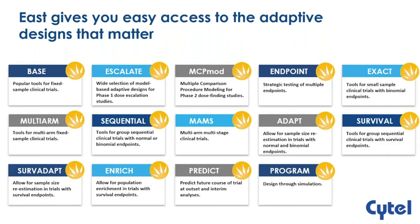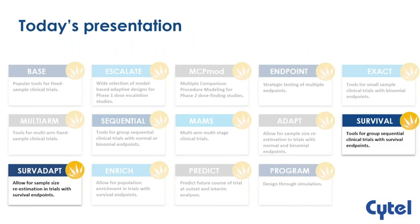I'd like to remind you that there was an extensive webinar on the details of the Survival module performed in late January, which was also recorded. In that webinar we went through the design of time-to-event studies — group sequential mostly — and we saw how to predict the course of events and use the latest features, including running an interim analysis using a surrogate endpoint such as something other than overall survival. Today we're focusing more on the sample size re-estimation parts.